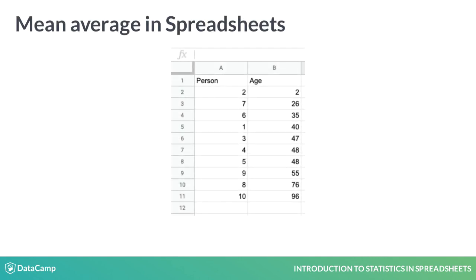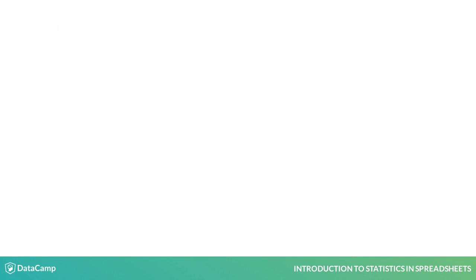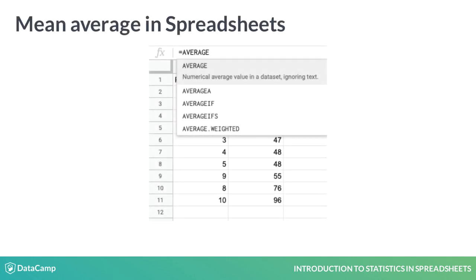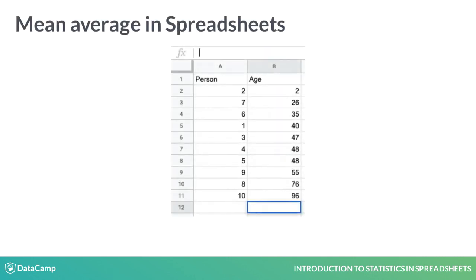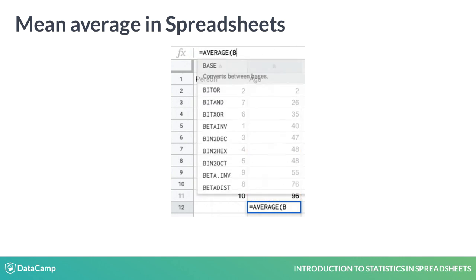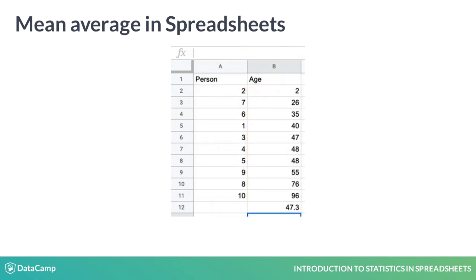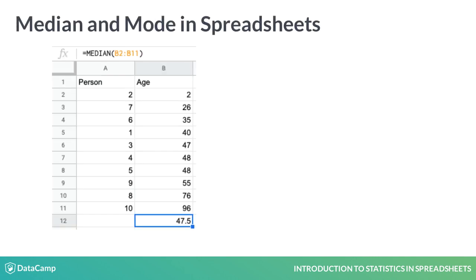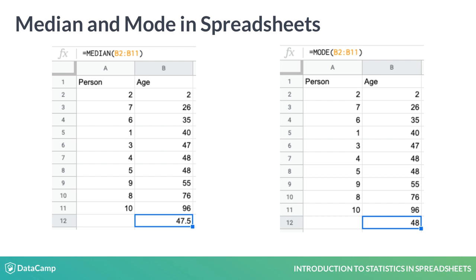You can calculate a mean using the average function. Here, we're passing in a range consisting of the cells B2 through B11 to the average function to calculate the mean. To calculate the median, use median. No surprise there. And use mode to calculate a dataset's mode.